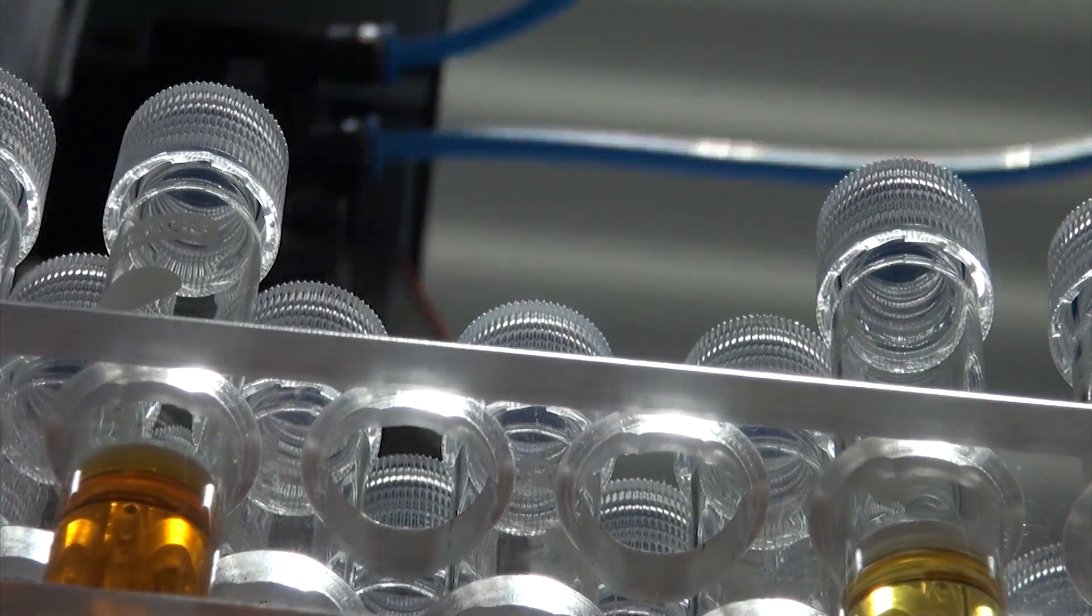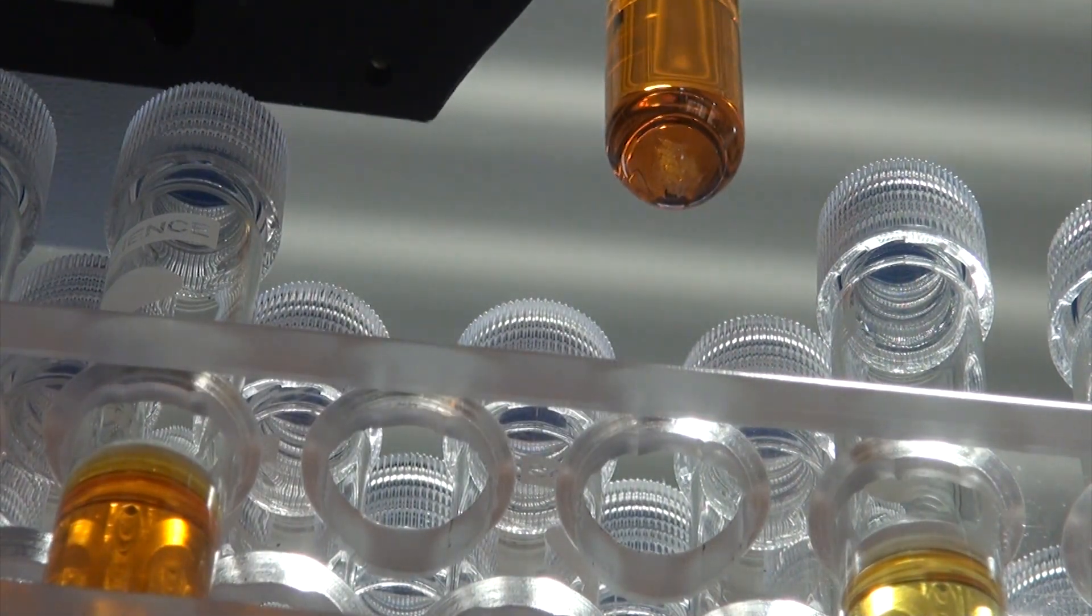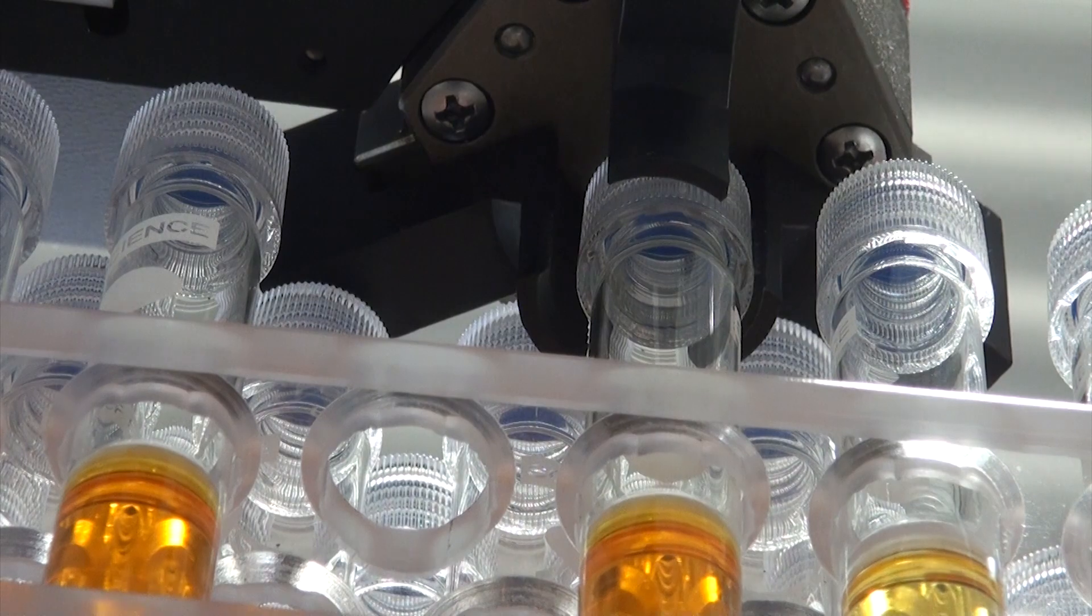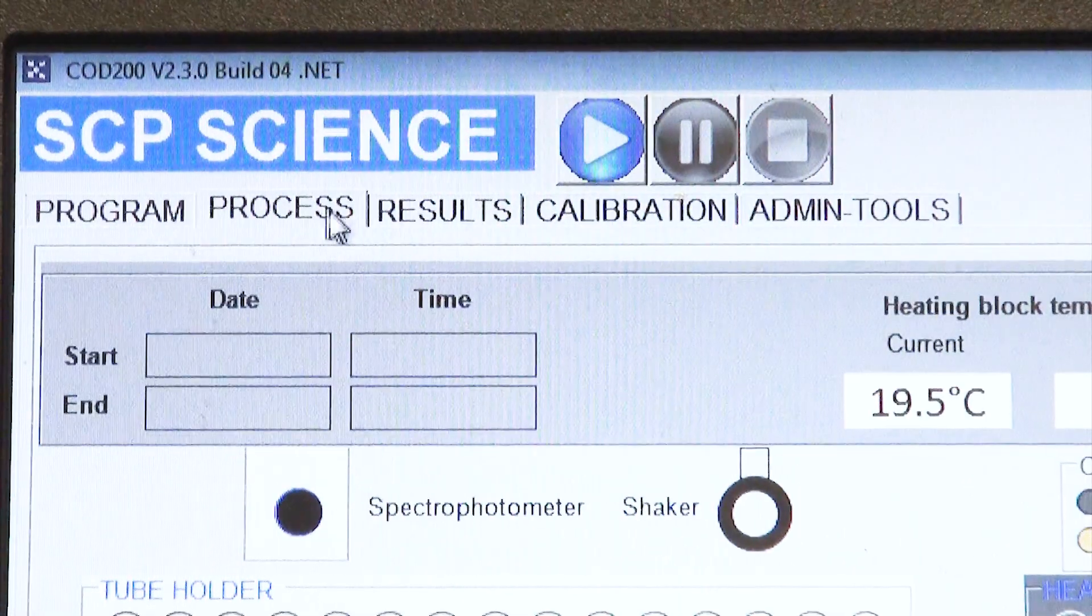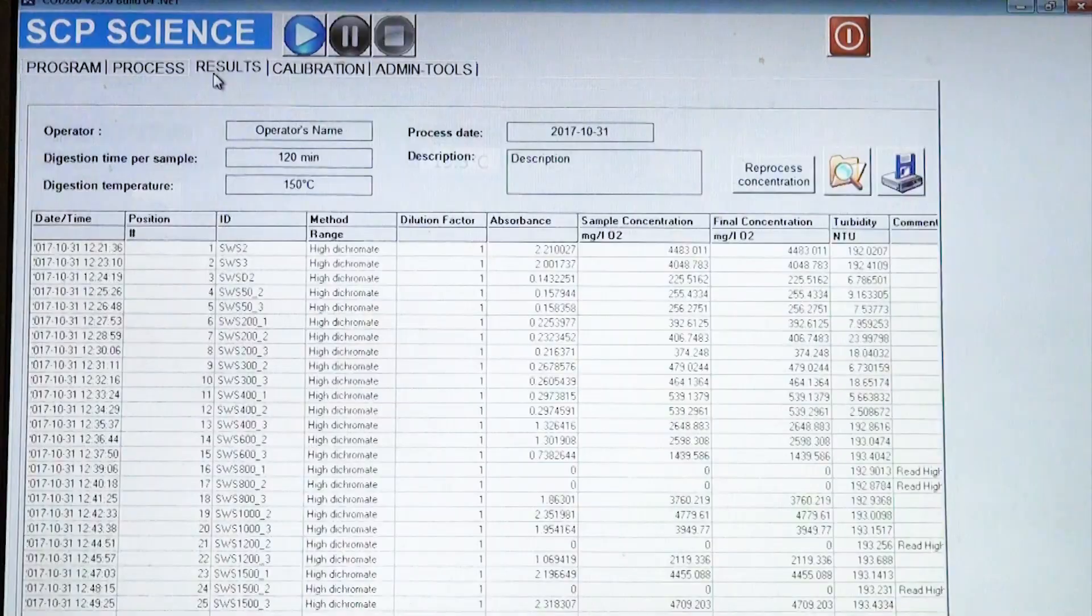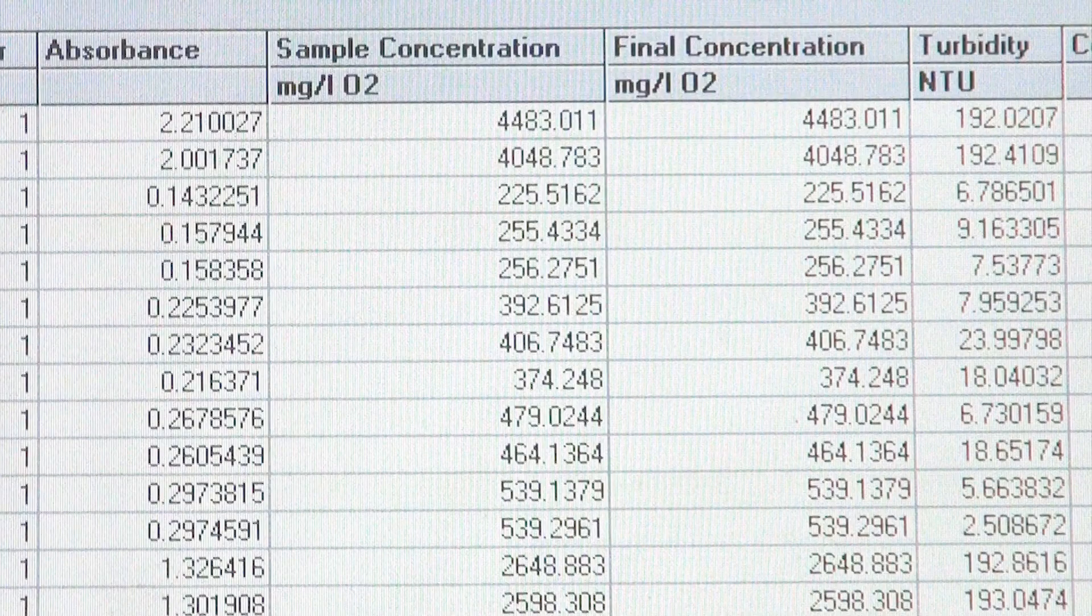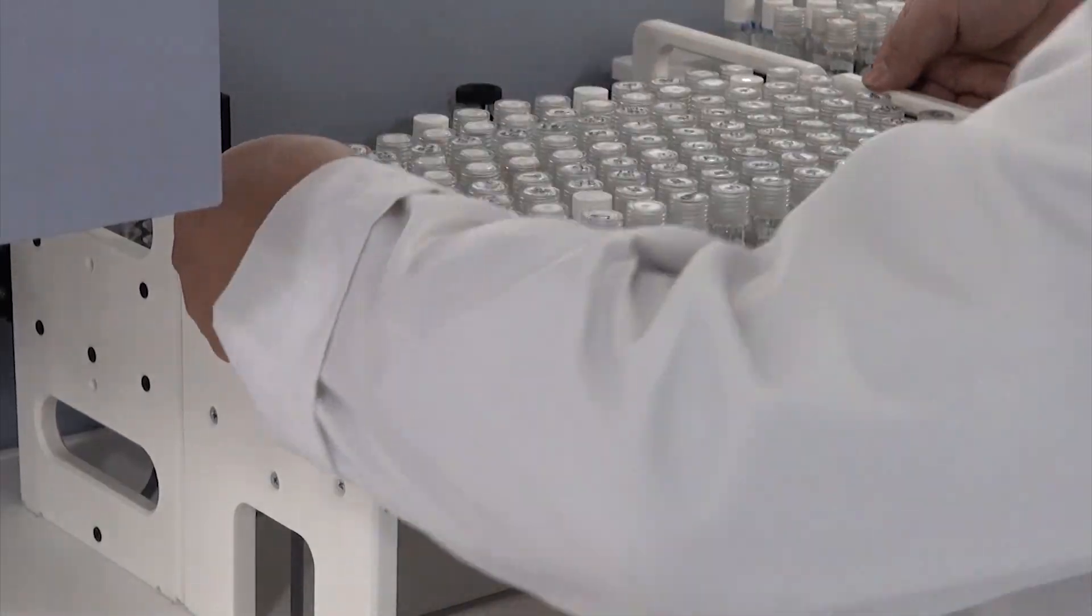All metal parts on the COD 200 are Teflon coated. The anodized frame and the exterior skins are corrosion resistant. Real-time software visualization of the run allows the user to easily track progress and results. Racks are easily moved on the system's platform.